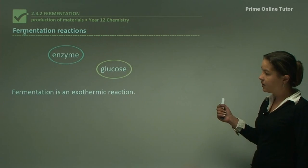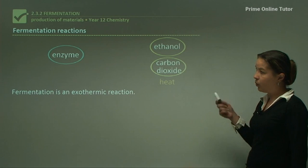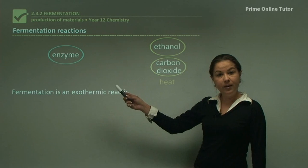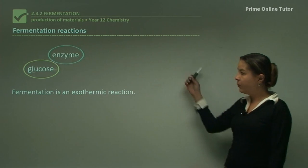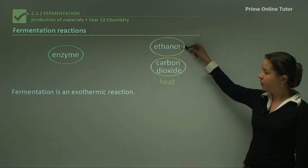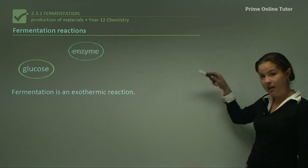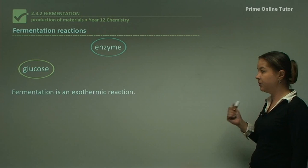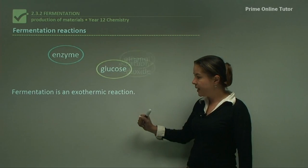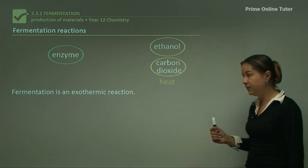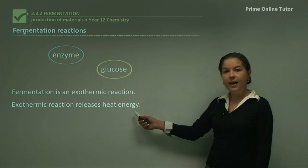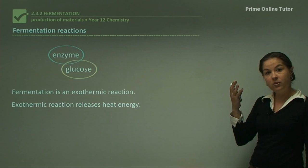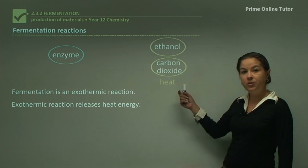Here's a simple diagram to help remember fermentation: we start with glucose, add an enzyme from the yeast, and produce ethanol, carbon dioxide and heat. That will always be the same reaction for fermentation. Fermentation is an exothermic reaction, which means heat energy is released. So not only does this reaction produce bubbles and gas, but it also produces heat.